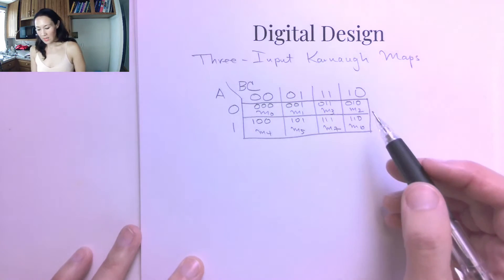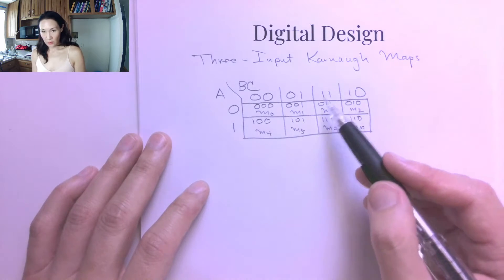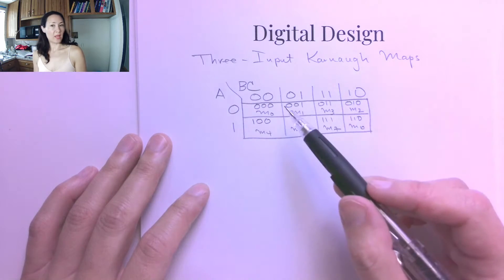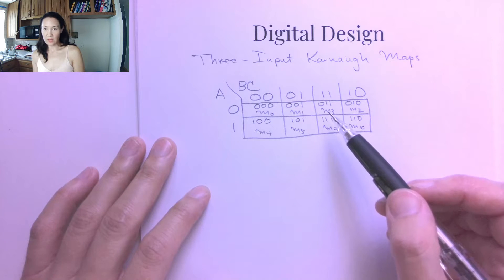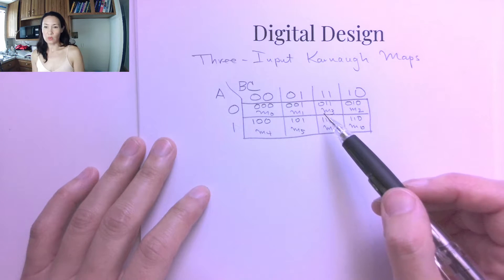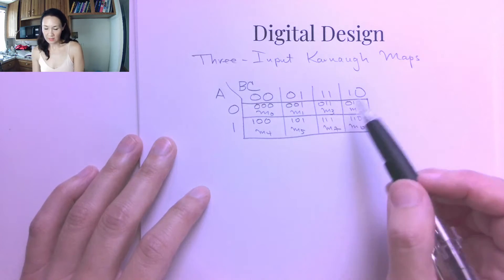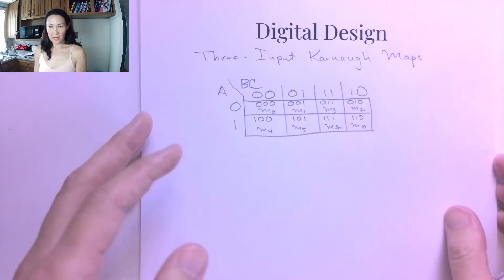The only thing we can't do is we can't do diagonal grouping and we can't do groups that are not in the form of 2 to the N. So we can't do groups of 3. We can't do groups of 5. We can't do groups of 6. It has to be 2, 4, 8, 16, etc.